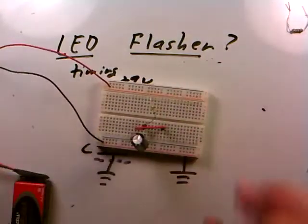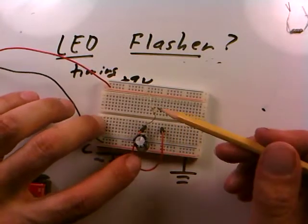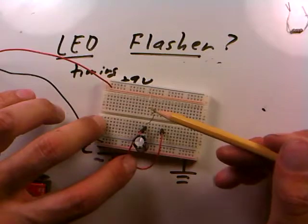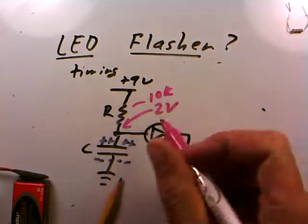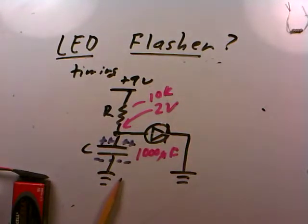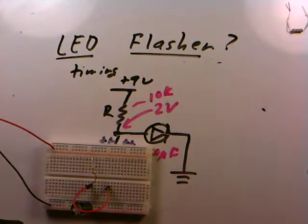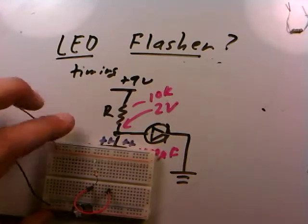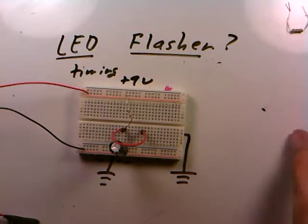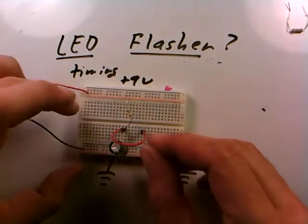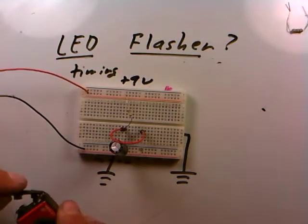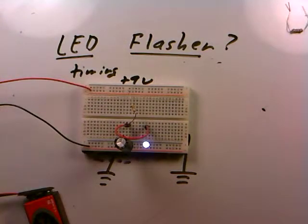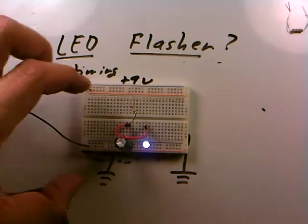Here's the circuit built on the breadboard. We have a 10K resistor — brown, black, orange — feeding a 1,000 microfarad capacitor, with a wire to connect the LED. I'll make sure the capacitor is fully discharged first, then connect a small blue LED. Connecting it now: 3, 2, 1. There the LED comes on — we saw the RC time constant — but for some reason the LED isn't going off. It's still not flashing; it's not going to be quite that simple.